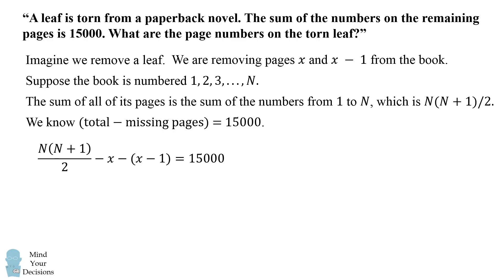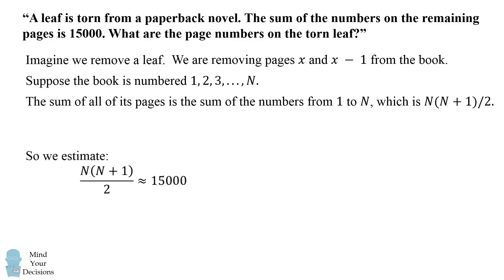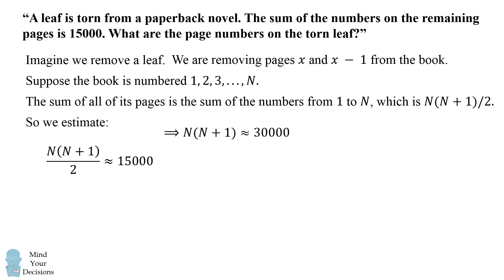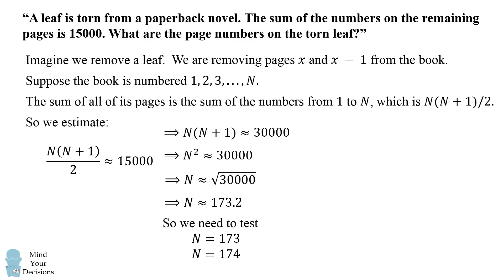Now there are two unknown variables in this equation, so we're not going to be able to solve it in a single equation. What we can do instead is use some estimation. Let's ignore x and x minus 1, so we have that n(n+1)/2 is approximately equal to 15,000, because the two page numbers will be small relative to 15,000. We can then estimate that n times (n+1) is approximately 30,000, meaning n squared is approximately 30,000, so n is approximately the square root of 30,000, which is about 173.2.